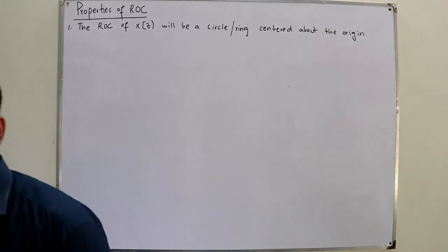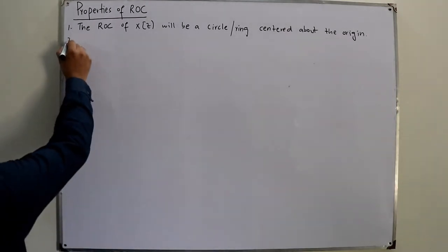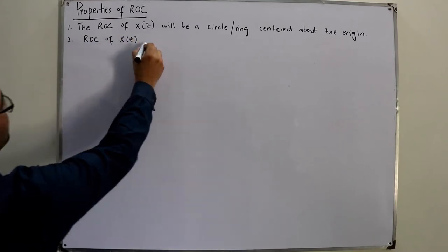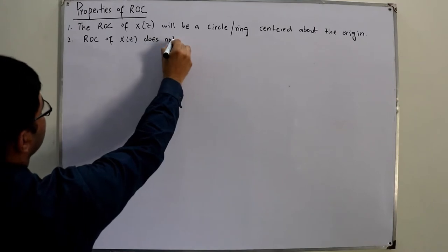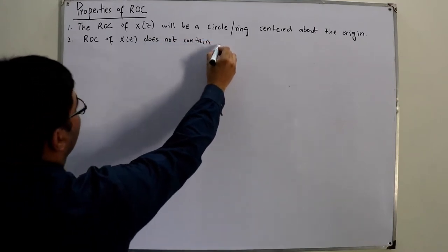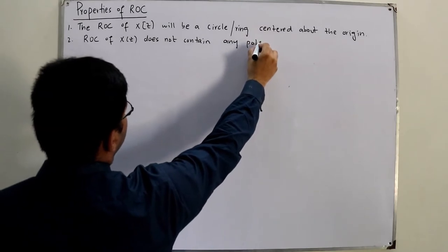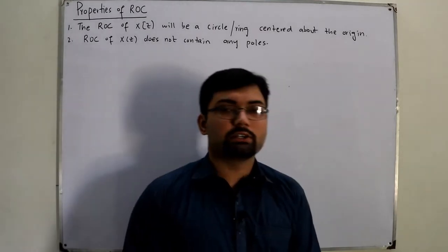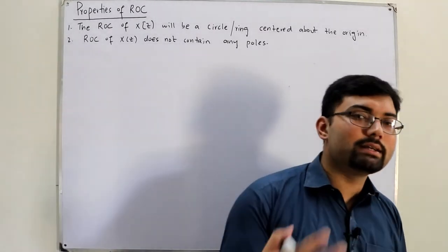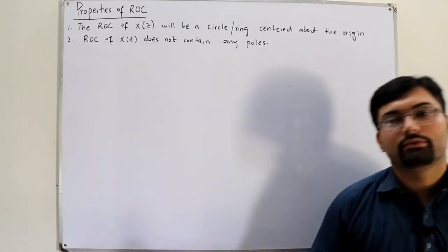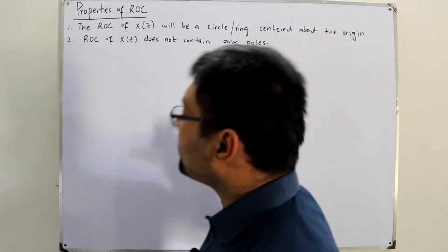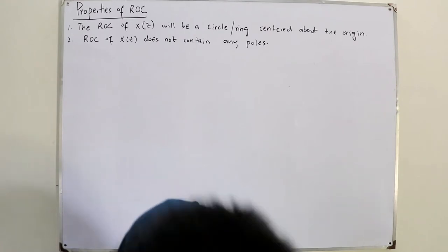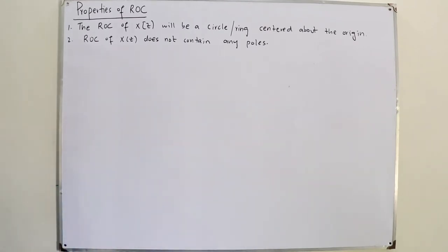The second property is that the ROC of X(z) does not contain any poles. This is because at poles the function does not remain analytical — the pole is a singularity of the function, which means the function becomes infinite there. So the ROC cannot contain any poles.